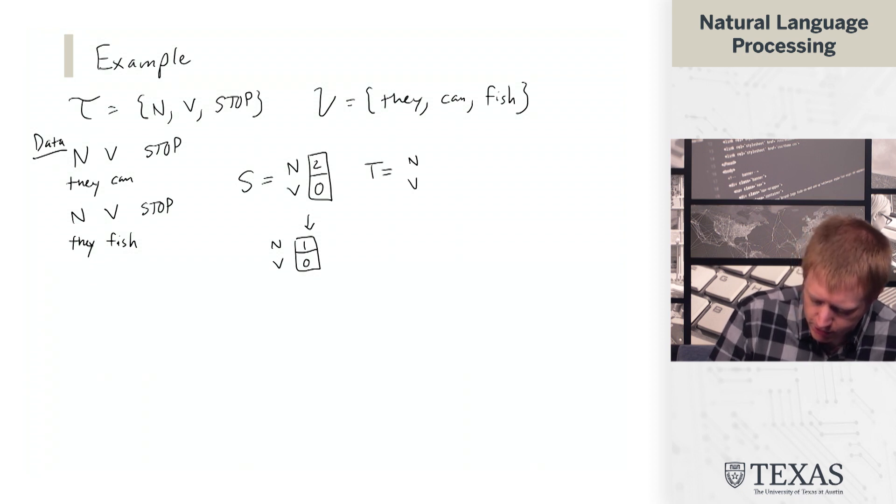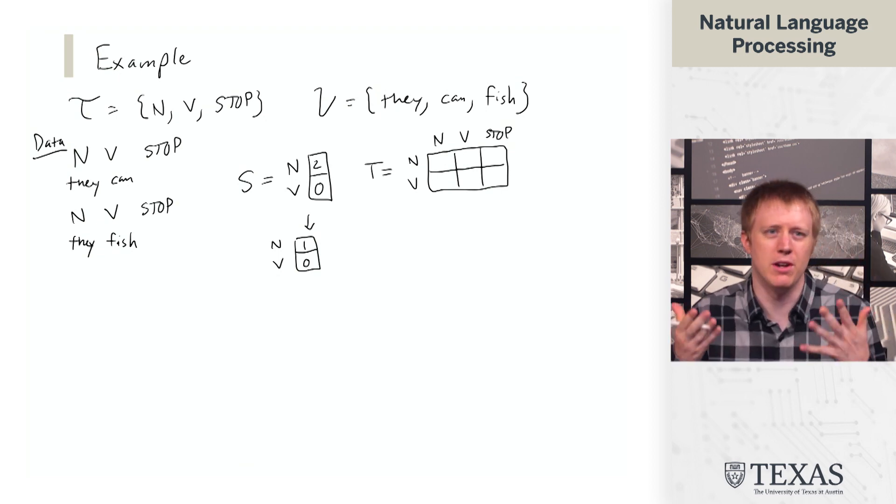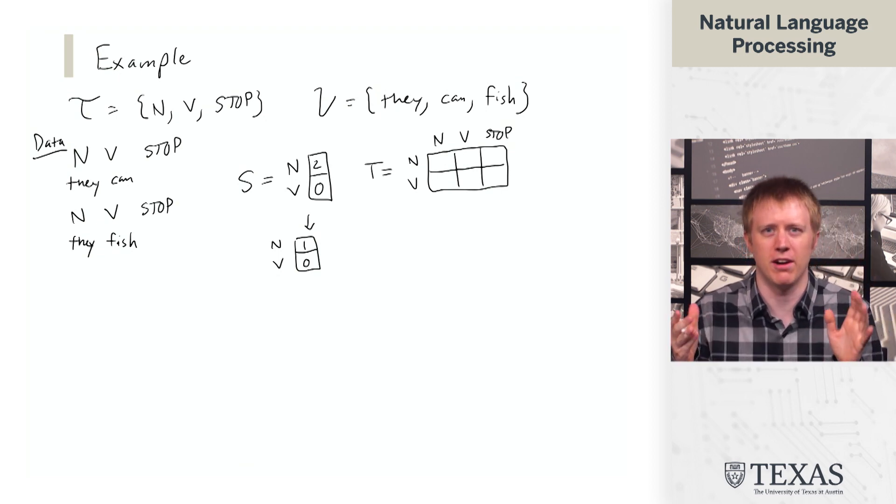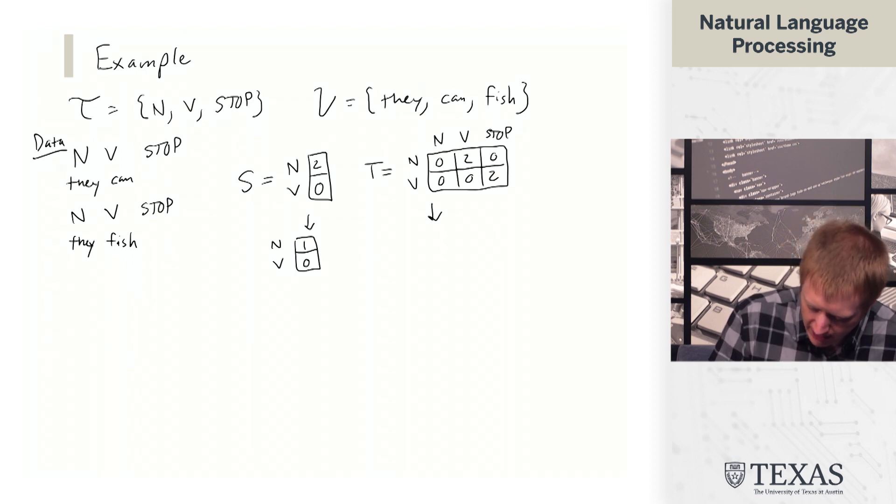For the transition probabilities between tags, we're going to draw this as a rectangular matrix. I said it was going to be square, but we are never going to transition from stop into anything else. And so given that, we don't need to ever have it as the probability of the previous thing. And so if we collect counts, we get this. And then when we normalize that, we get the following.